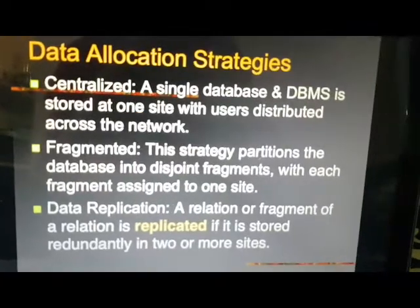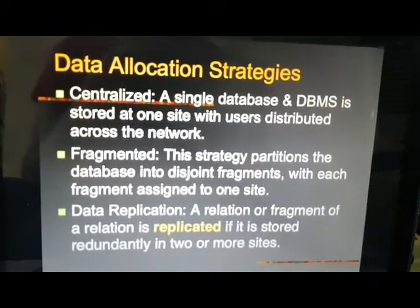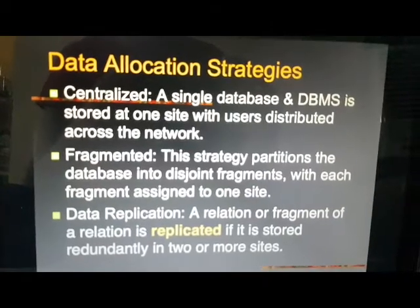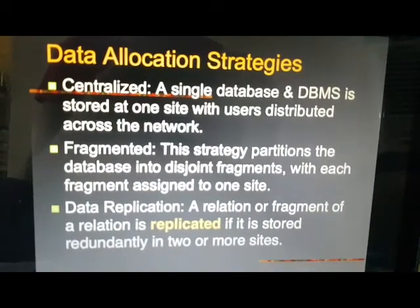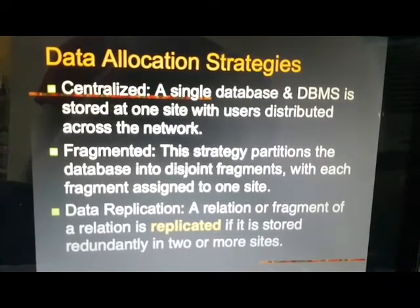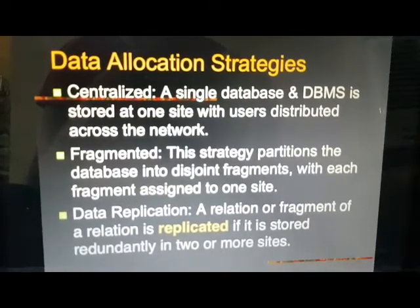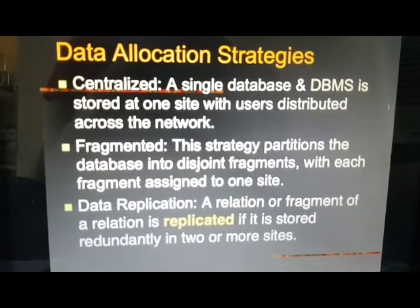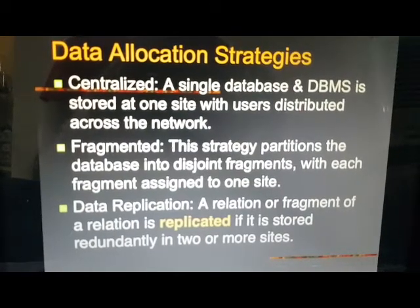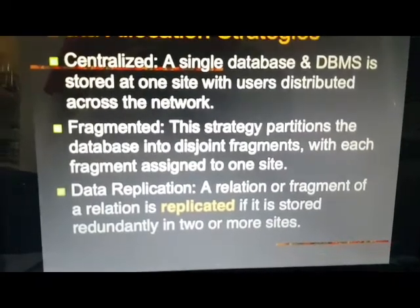Next topic is data allocation strategies — it means we have to allocate the data to different sites using different strategies. One of them is centralized, where all the data is stored at one place with a single DBA and single DBMS. A single database and DBMS is stored at one site with users distributed across the network. If we talk about fragmented data allocation, the data is partitioned across sites.